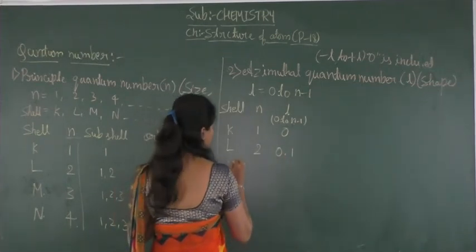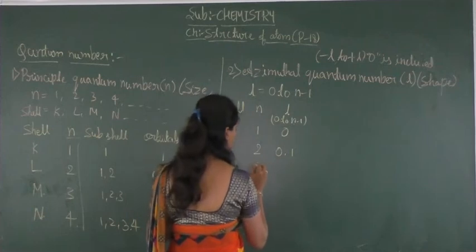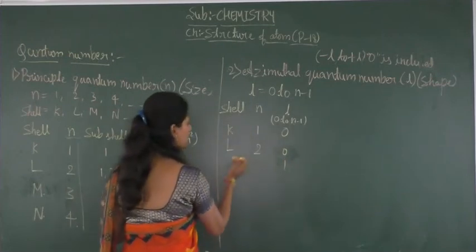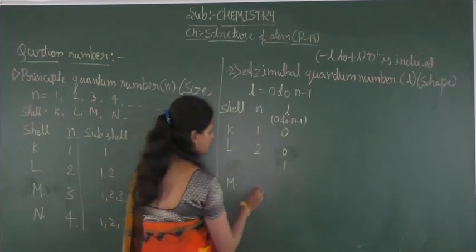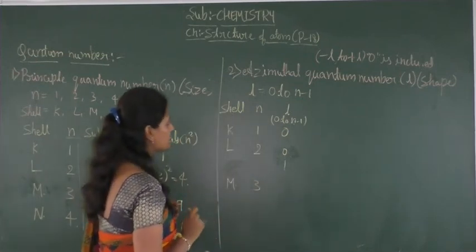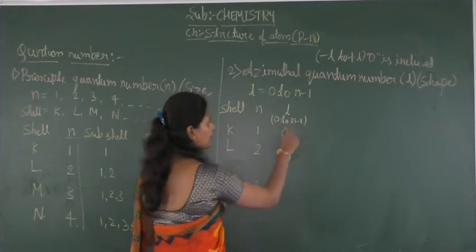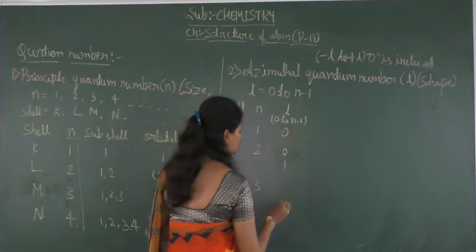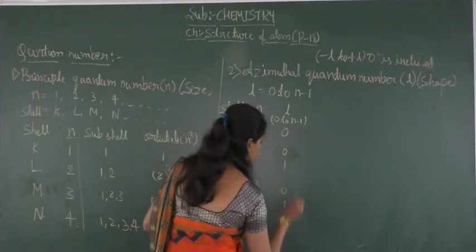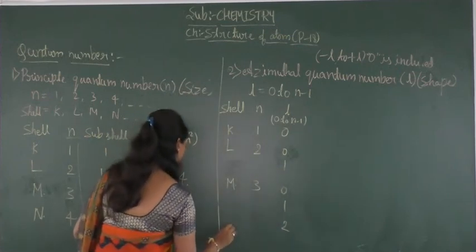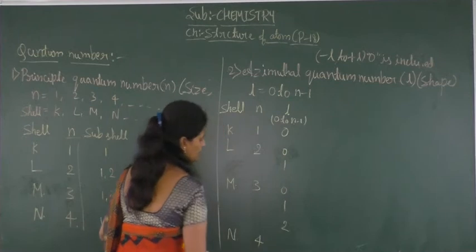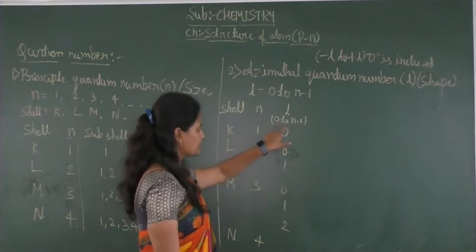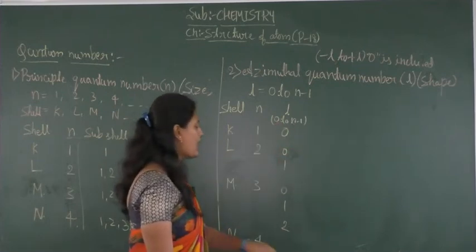For the M shell, the principal quantum number is 3, so l varies from 0 to 2, giving values 0, 1, and 2. For the N shell, the principal quantum number is 4, so the values of l vary from 0 to 3, giving values 0, 1, 2, and 3.